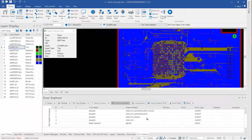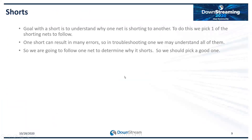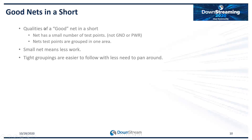At this point we have to assume these errors are real. Our goal with a short is to understand why one net is shorting to another. We pick one of the shorting nets to follow — one short can result in many errors, so troubleshooting one may resolve all your shorts. Don't be overwhelmed if you got 50 or 100 shorts — pick one to follow. It's important to pick a good one: a net with a small number of points grouped in a small area. You don't want to follow ground or power, as that's a lot of work.